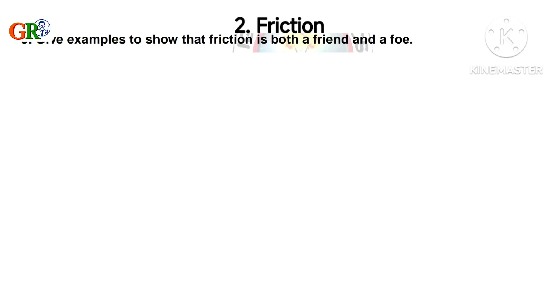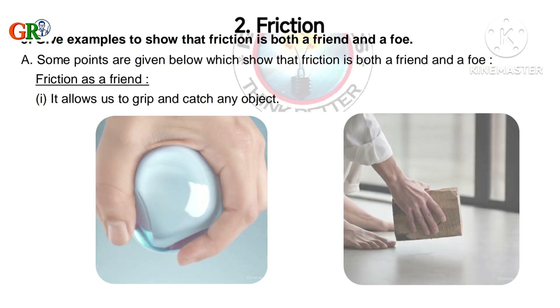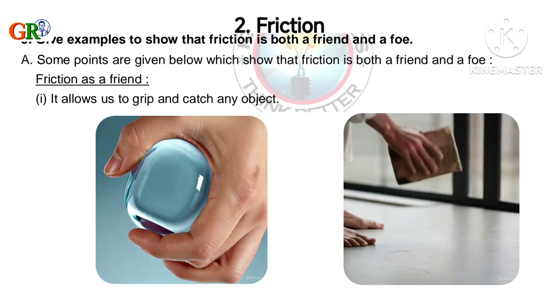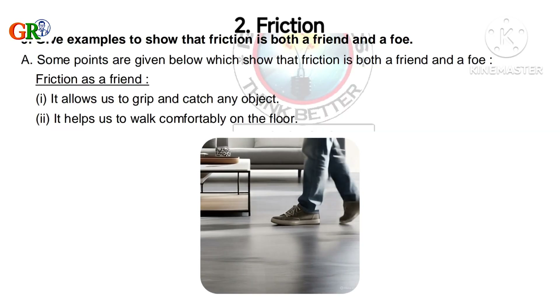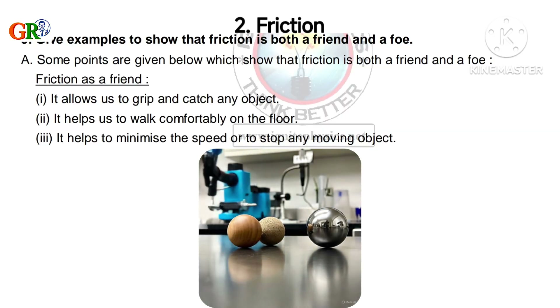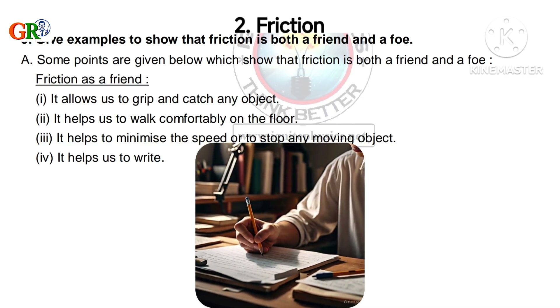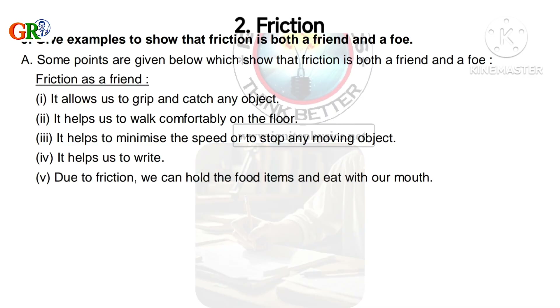Ninth question: Give examples to show that friction is both a friend and a foe. Friction as a friend: it allows us to grip and catch any object; it helps us to walk comfortably on the floor; it helps to minimize speed or stop any moving object; it helps us to write; and due to friction we can hold food items and eat.